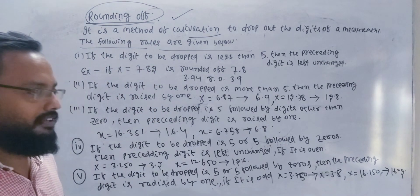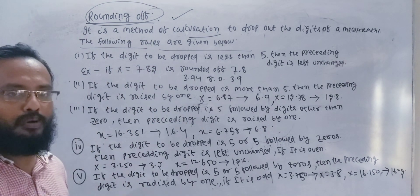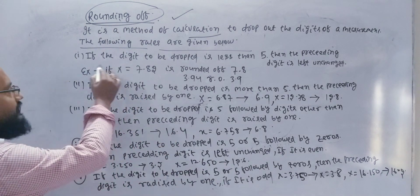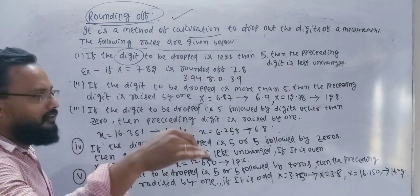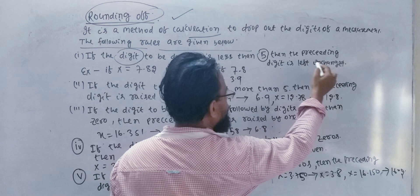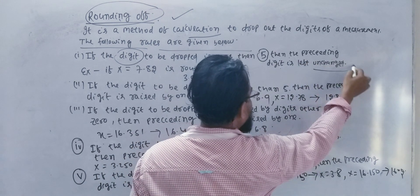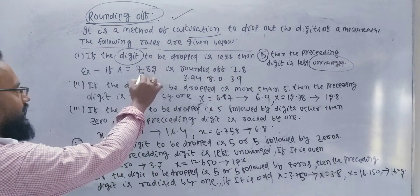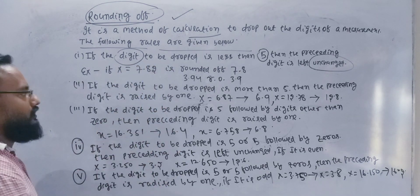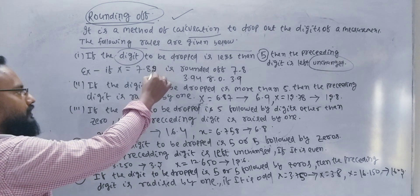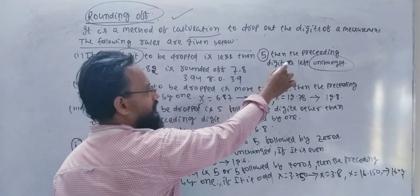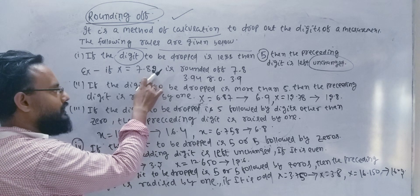Rule 1: If the digit to be dropped is less than 5, then the preceding digit is left unchanged. For example, x equals 2.8 — if the last digit is 2, and 2 is less than 5, then the preceding digit remains unchanged. So 2.8 rounded becomes 2.8, with the preceding digit staying the same.